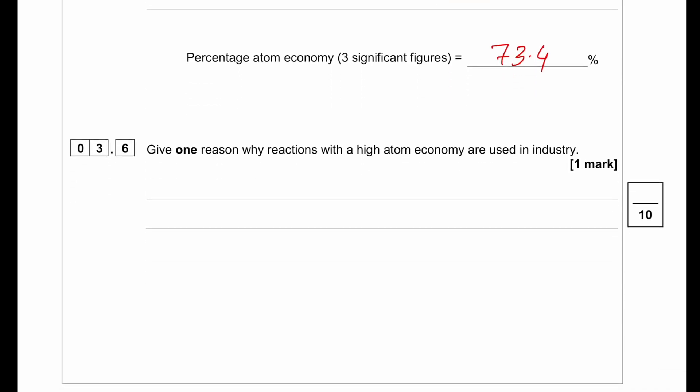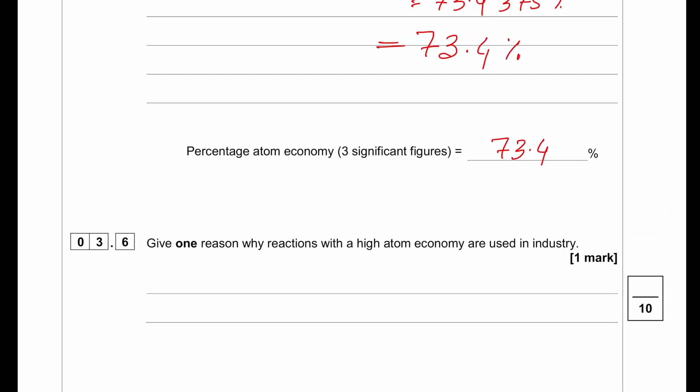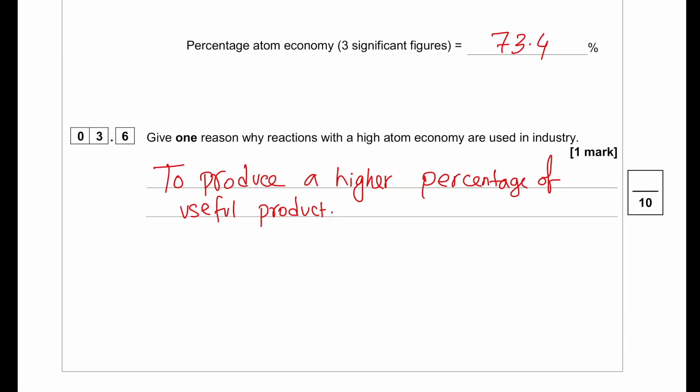Give one reason why reactions with high atom economy are used in industry. Reactions with high atom economy have economical importance, so they are more sought after. They only produce useful product and do not produce byproducts. All right guys, that's all for this particular video. Best of luck for your exam and see you in the next video. Bye-bye.